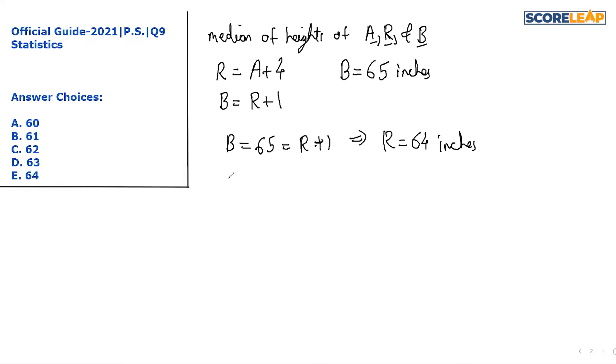R equals 64 equals A plus 4, which implies A equals 60 inches. So the heights of Emmy, Ron, and Barbara are 60, 64, and 65 inches respectively.